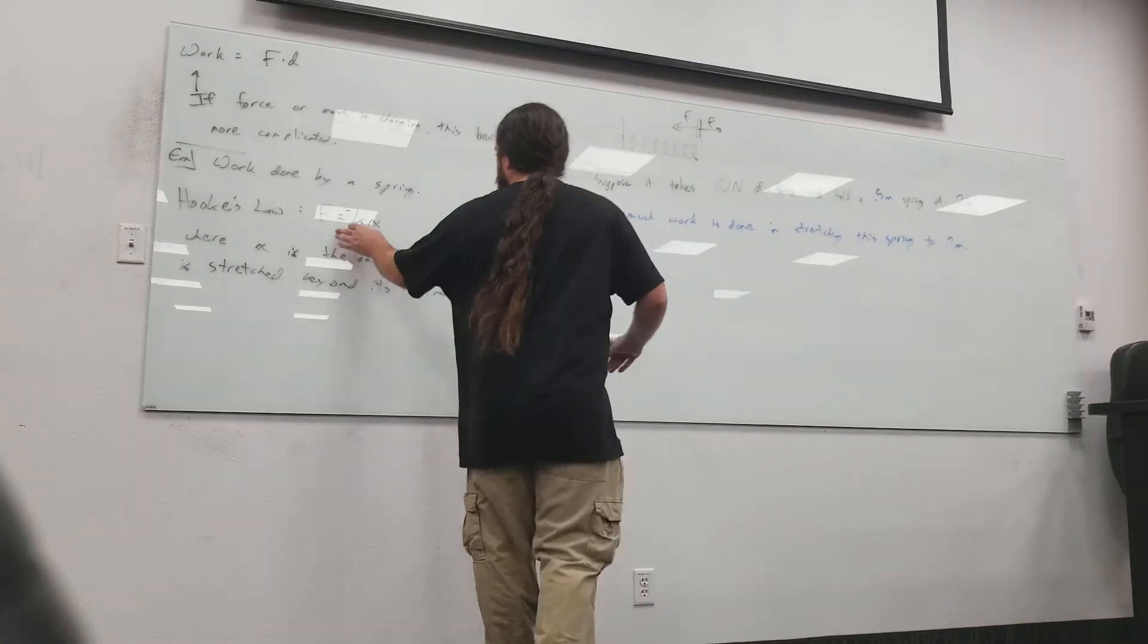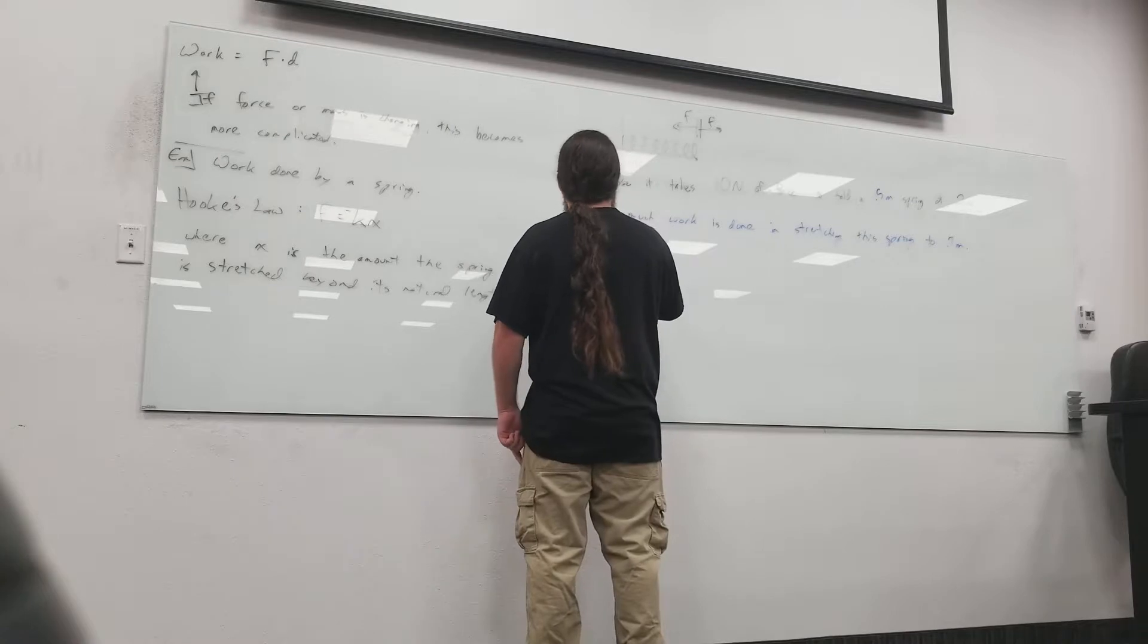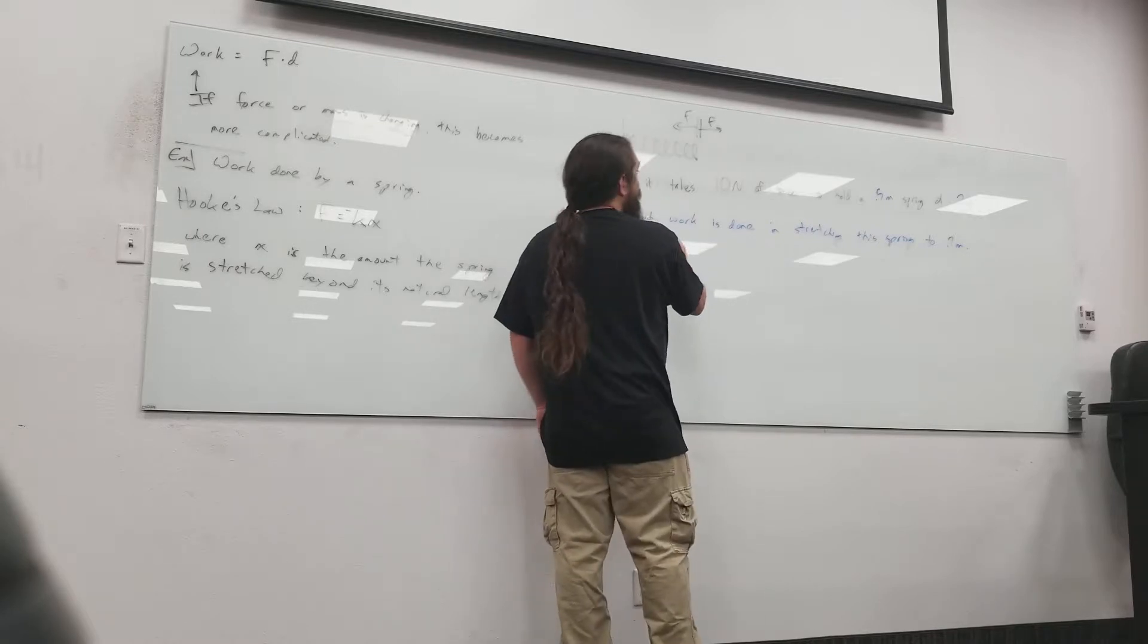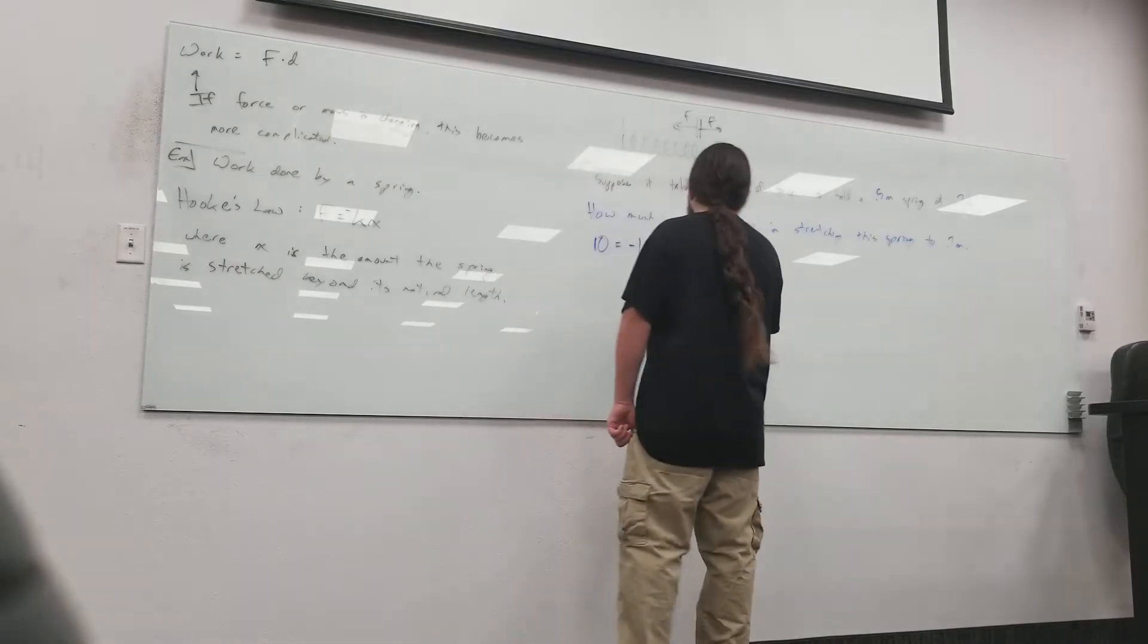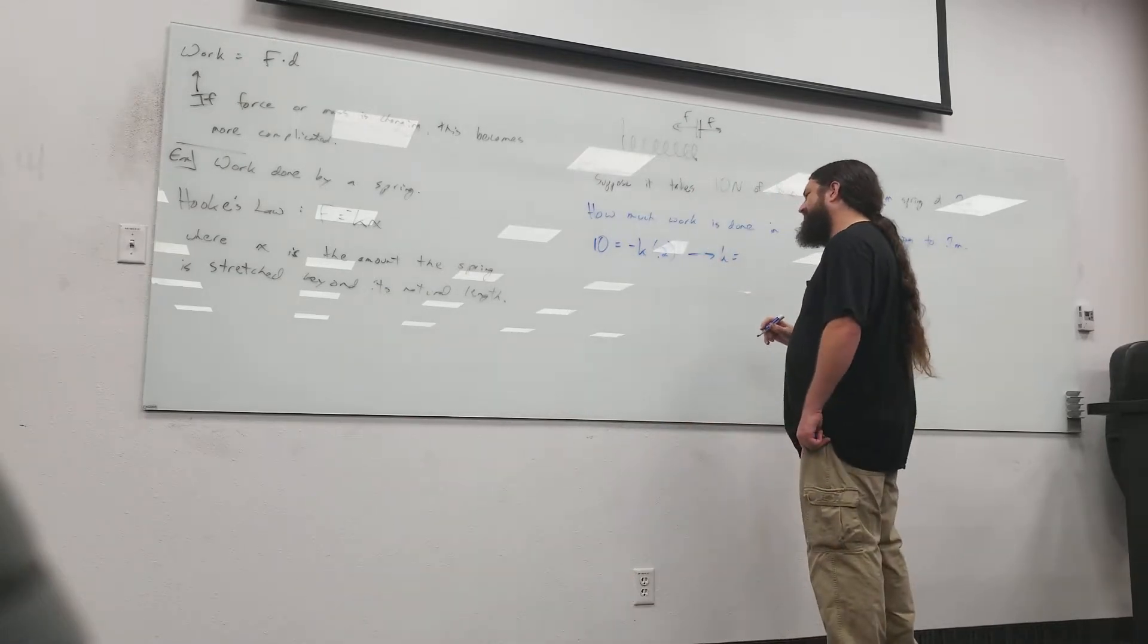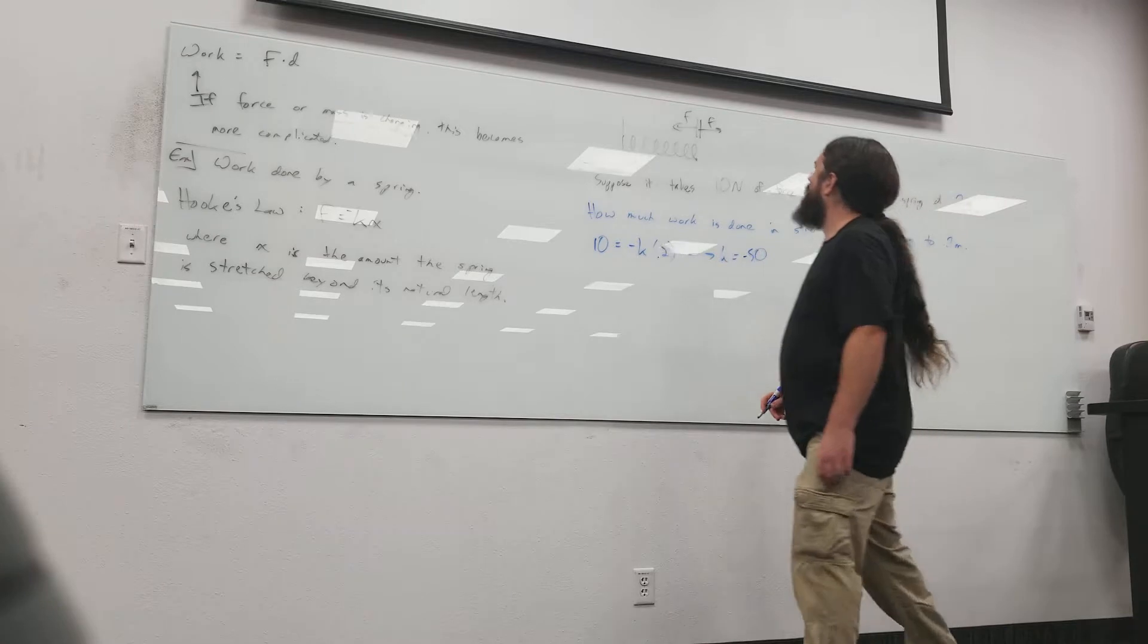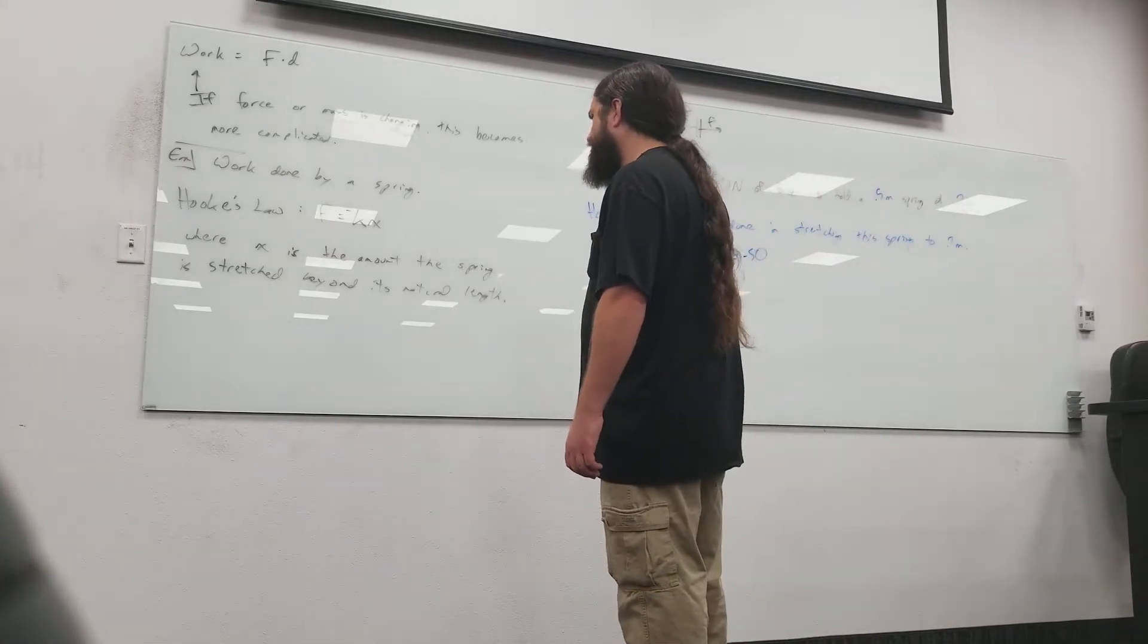So what we need to do is figure out what this spring constant is. So, I know that 10 newtons is equal to whatever negative k is times 0.2. That's the amount that's displaced. And that tells me that k is going to be, what, 50 or negative 50? So k is going to be negative 50.